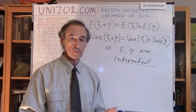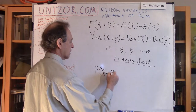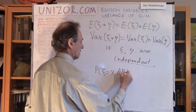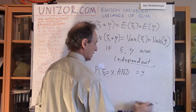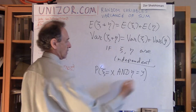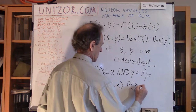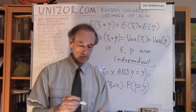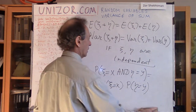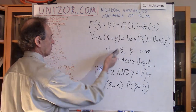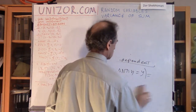One of the very important properties of independent random variables is that the probability of one of them taking the value X and another simultaneously taking the value Y is equal to the product of their individual probabilities. That's the property I'm going to use in this lecture to prove this equality for independent random variables ξ and η.